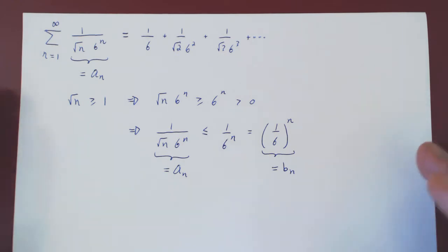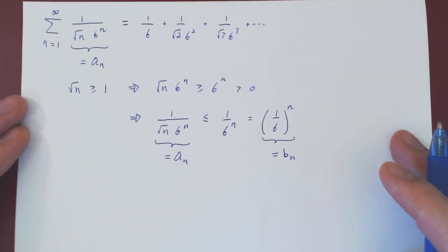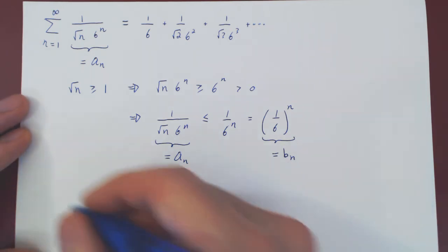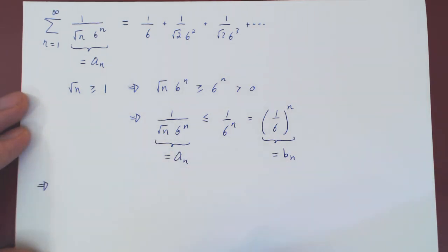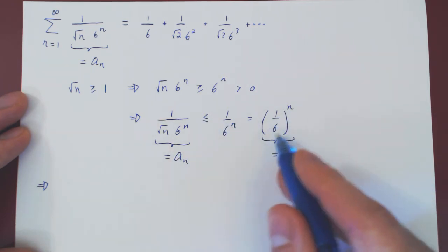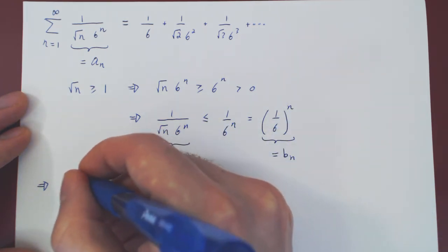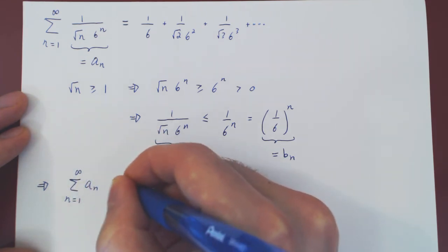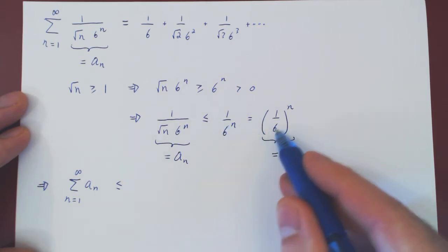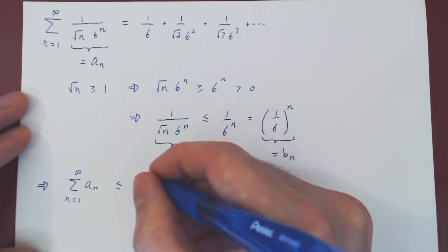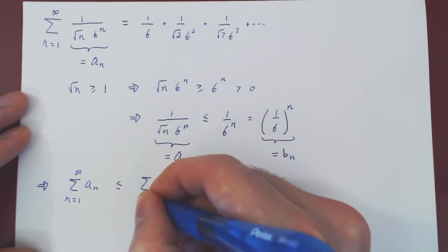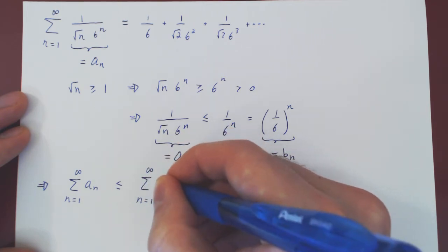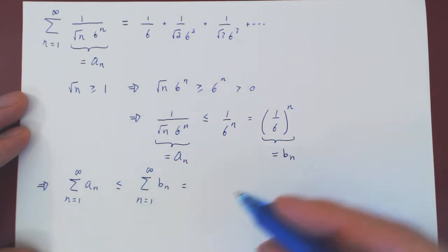And now we can apply the comparison test, which again is simply the comparison idea. So, if a_n is less than b_n for every n, then clearly summing up smaller terms will be smaller than summing up the larger terms.